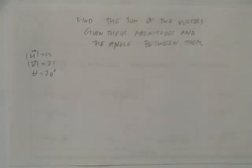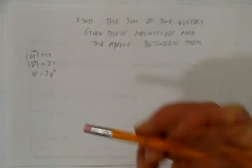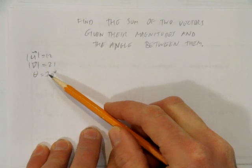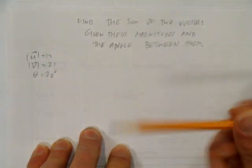In this video, we'll look at finding the sum of two vectors when we're given their magnitude and the angles between them. The two vectors we have are u and v, and we're told that the magnitude of u is 12, the magnitude of v is 21, and the angle between them is 70 degrees.